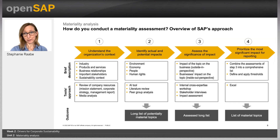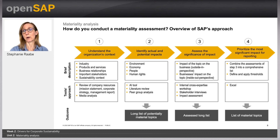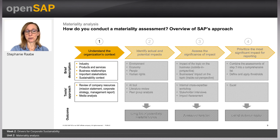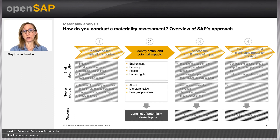I will talk about how we at SAP conducted our materiality analysis. When we started our analysis, we took guidance from the Global Reporting Initiative's process description and definitions. Our process in 2022 contained four steps. First, we deepened our understanding of our industry, what we produce, and who our important stakeholders are. In the second step, we identified actual and potential impacts on the environment, economy, and society with special consideration of human rights. We screened the GRI and SASB standards and many more industry-relevant data during this process, and also made use of an artificial intelligence tool to help analyze the data.